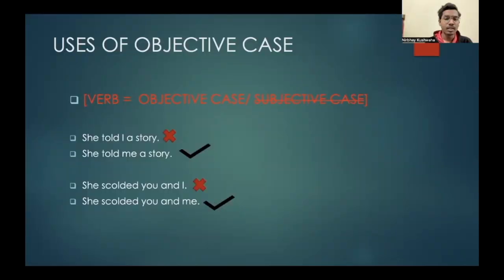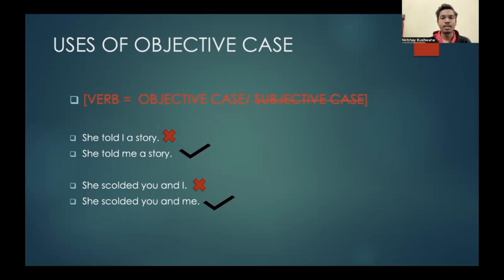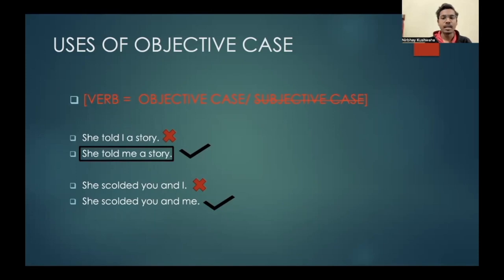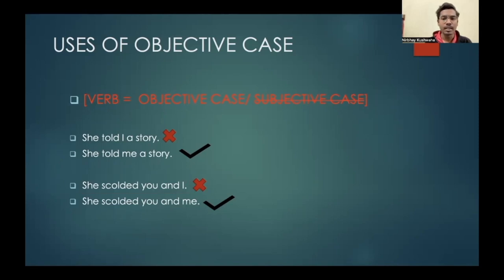Now let's come to the objective case. Whenever there is a verb in a sentence, it is followed by an objective case pronoun. For example: 'She told I a story.' Here 'told' is a verb and it will be followed by the objective case pronoun, so we replace 'I' with 'me' and the sentence becomes 'She told me a story.' In the second sentence: 'She scolded you and I.' Here 'scolded' is the verb, so we replace 'I' with 'me', and the sentence becomes 'She scolded you and me.'